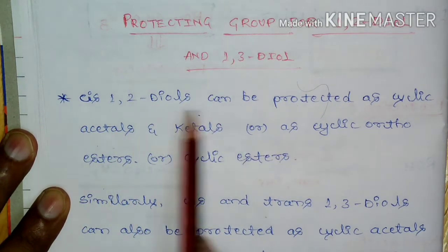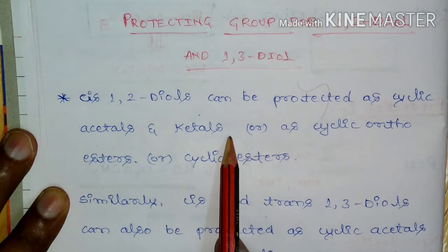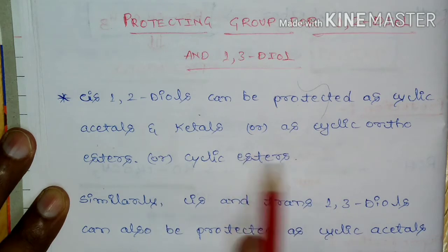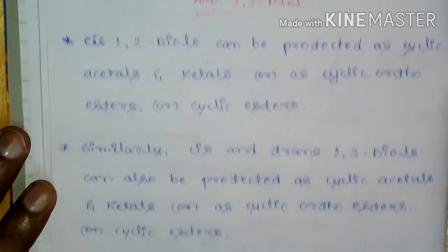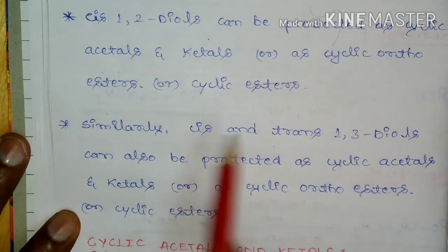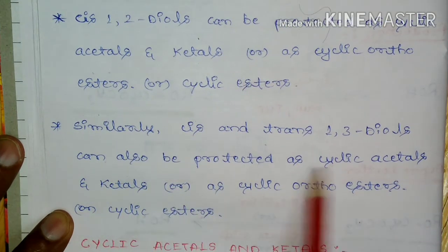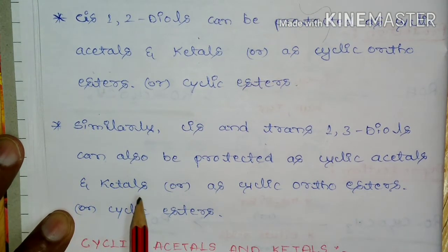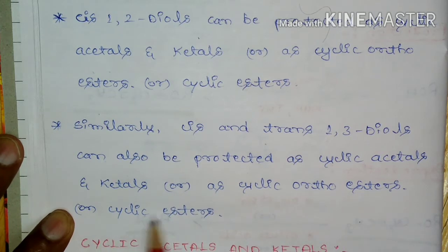Cis-1,2-diols can be protected as acetals and ketals, or as cyclic orthoesters or cyclic esters. Similarly, cis and trans-1,3-diols can also be protected as cyclic acetals and ketals, acyclic orthoesters, or cyclic esters.